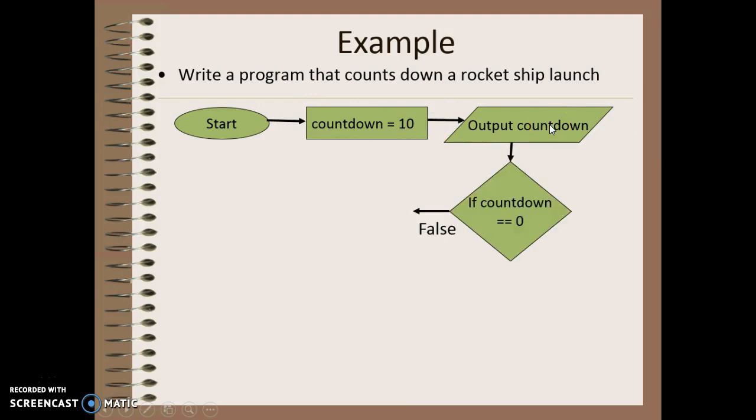So our countdown value is at 10, and then we output what that value is. So we output 10. We then check, are we at 0 yet? As long as we're not at 0,